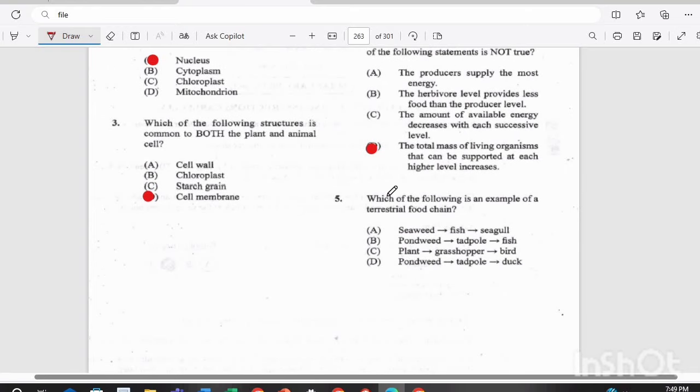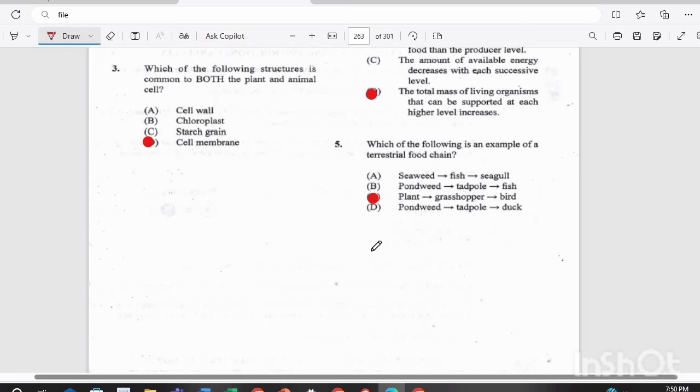Question five. Which of the following is an example of a terrestrial food chain? Is it A. Seaweed, fish, seagull? B. Pondweed, tadpole, fish? C. Plant, grasshopper, bird? Or D. Pondweed, tadpole, duck? And terrestrial, we know that word means land. So the answer there is obviously C. Plant, grasshopper, and bird.